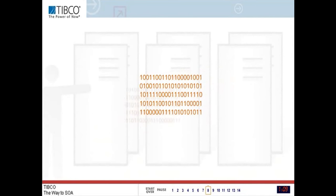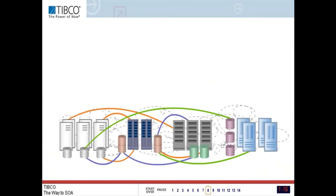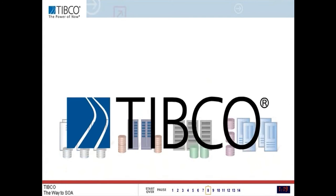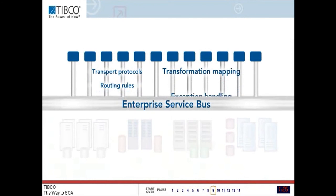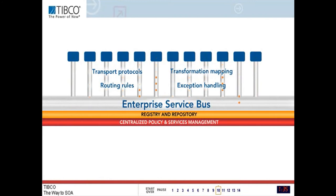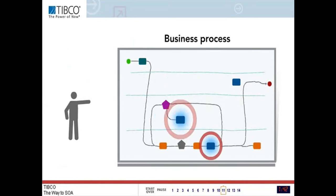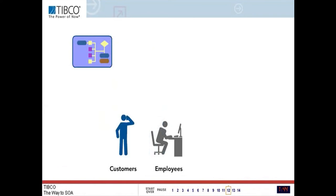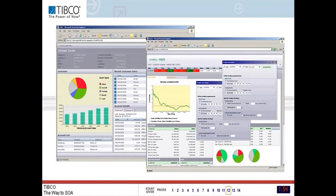Enterprise-scale SOA works as follows: you create services from new business logic and wrap existing legacy assets to expose them as services. You then connect them using an enterprise service bus, make them available for reuse via a services registry and repository, and define security policies — specifying who can use a service and what for. The assembled services form a complete business process, accessed by customers, employees, and trading partners through portals and Ajax rich internet applications.